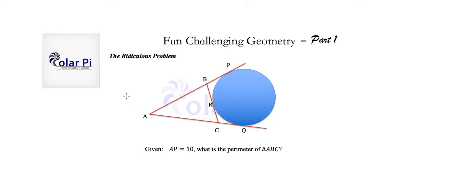But anyway, the solution to this problem, now that I've given you enough time to think about it, is that the perimeter of triangle ABC is 20. And here's how.